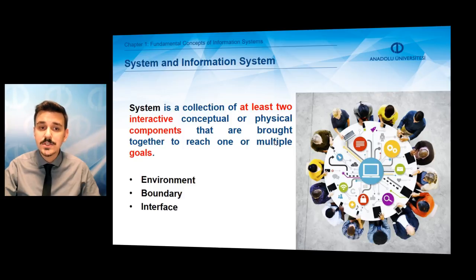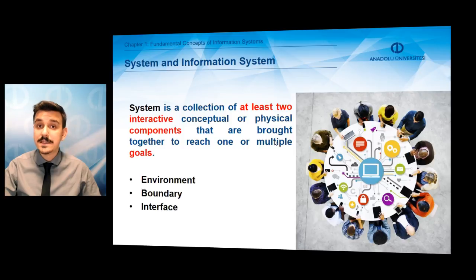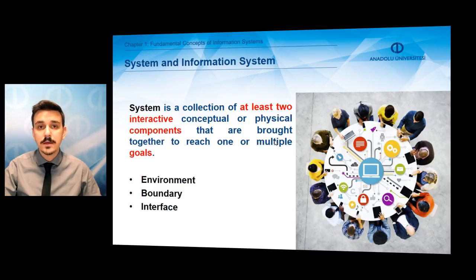A system is a collection of at least two interactive conceptual or physical components that are brought together to reach at least one goal. Each system must have at least two components — they could be conceptual or physical — they must interact with each other, and there must be at least one goal. Apart from these components, there are some other concepts to be investigated regarding system concepts.